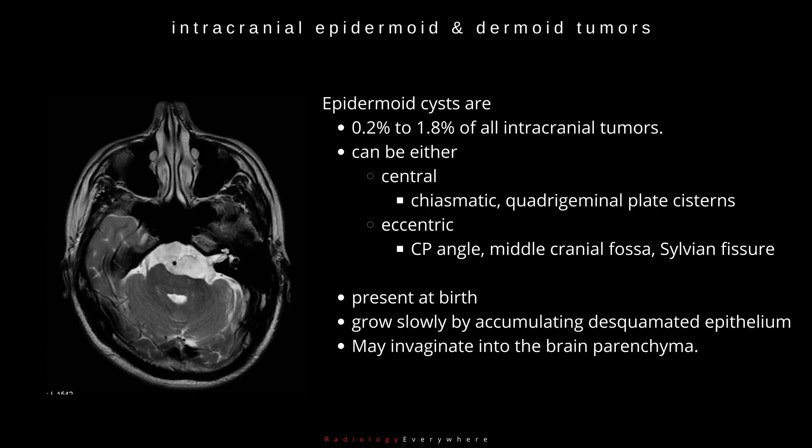Epidermoid cysts are 0.2% to 1.8% of all intracranial tumours. They can be either central, within the chiasmatic and quadrigeminal plate cisterns, or eccentric, within the cerebellopontine angle, middle cranial fossa, or sylvian fissure.